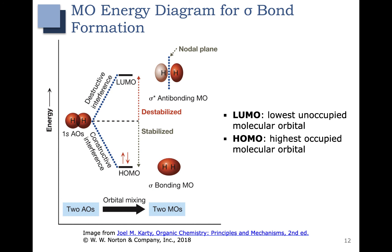We want electrons only in bonding molecular orbitals — this is a stable situation. If we had more electrons and started adding them to the antibonding molecular orbital, this would destabilize our system. Systems that do have electrons in antibonding orbitals are very unstable, and in most cases they can't even exist. We'll look at some more complicated molecular orbital diagrams later on in this lecture.